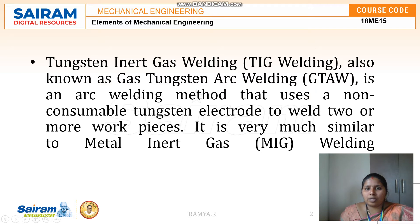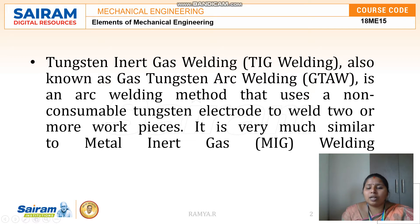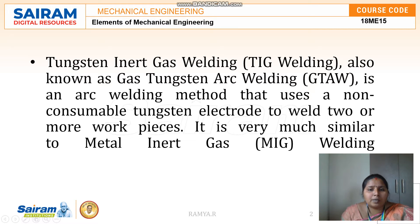As we saw in the previous video, there are two types of electrodes: consumable and non-consumable. In TIG welding we use a non-consumable electrode to weld two or more work pieces. It is very similar to Metal Inert Gas welding, as both are types of arc welding.